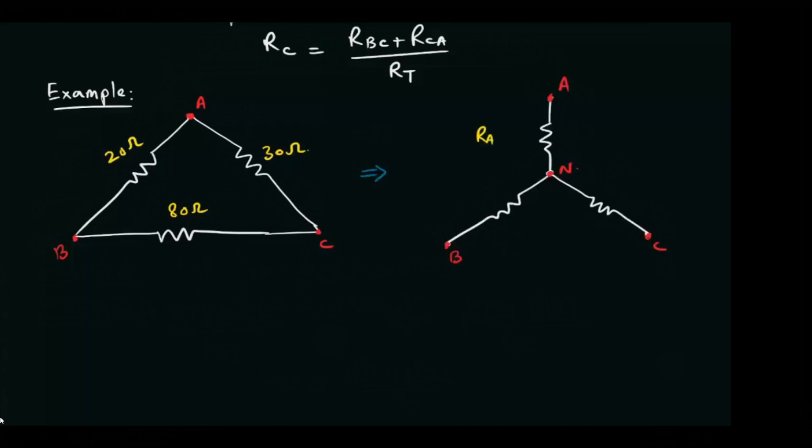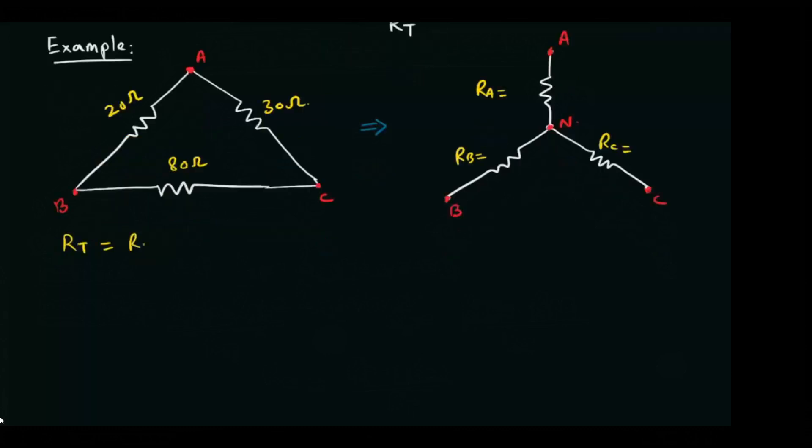And we have to find RA, RB, and RC. RT is the sum of all resistances and is equal to 130 ohm.